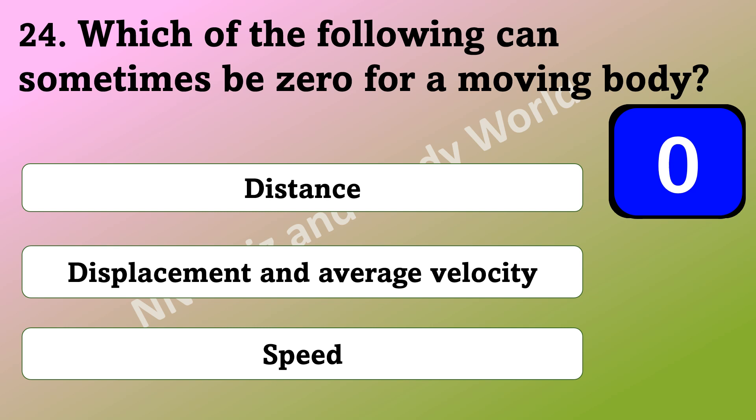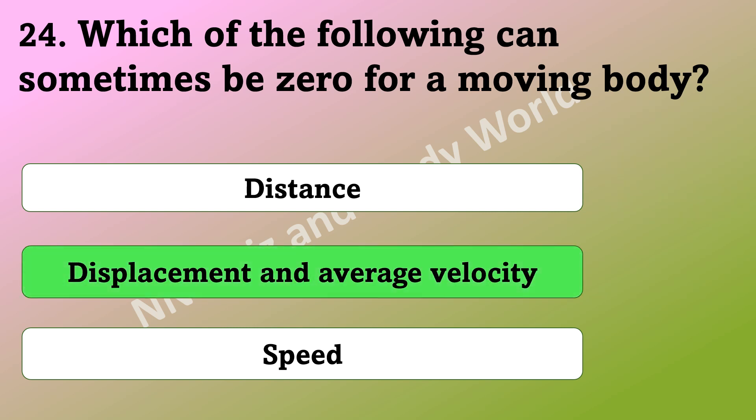Which of the following can sometimes be zero for a moving body? Is it distance, displacement and average velocity, or speed? The answer is displacement and average velocity.